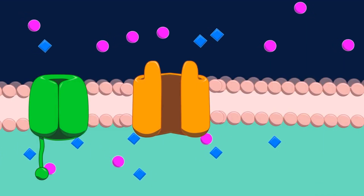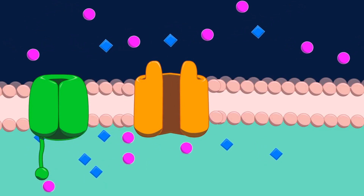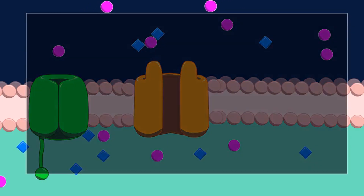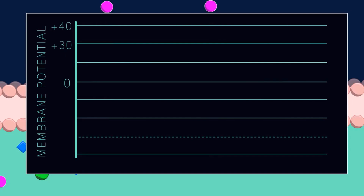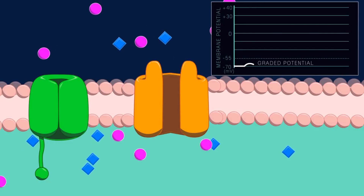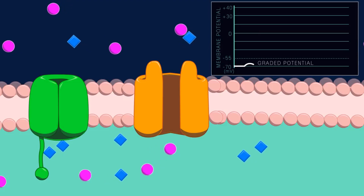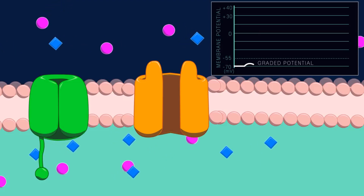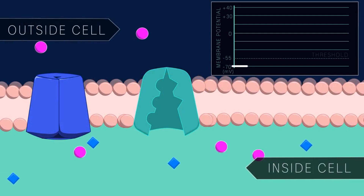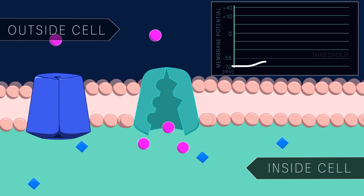As ions move through a channel and cross from one side of the cell membrane to the other, they cause the membrane potential of the cell to move away from its resting potential. If the resulting change in membrane potential is small, we call this a graded potential. Graded potentials can vary in size, can be either positive or negative, are transient, and typically do not result from the opening of voltage-gated ion channels. When ion channels open and a graded potential occurs, the neuron moves quickly to reset its membrane potential to resting values.